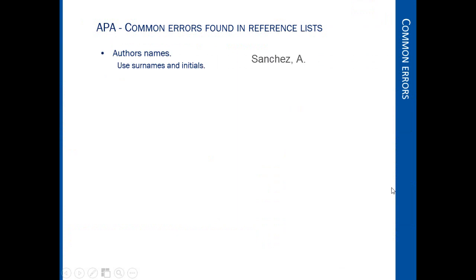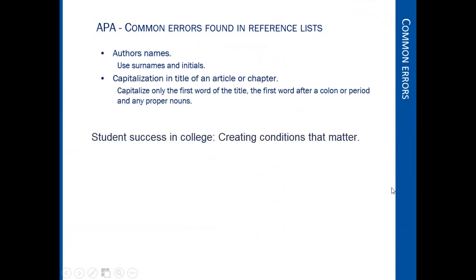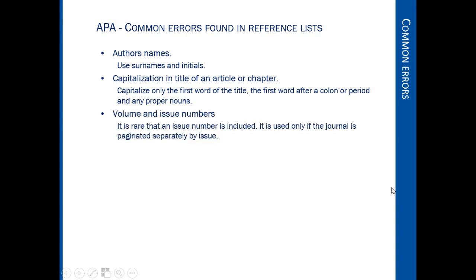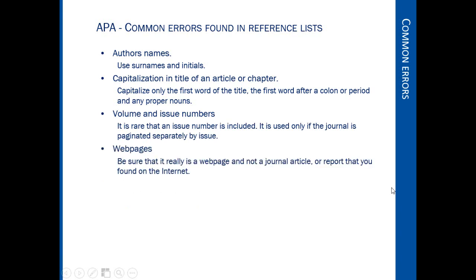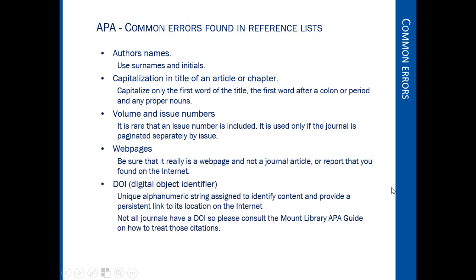Check your reference list for the following: your author should be the surname and the initial. Your title for an article or a chapter should be sentence case — that means capitalize the first word of the title and the first word after the colon or period. It's rare that you will have an issue number; it's only used if the journal is paginated separately by issue, which is quite rare. Be sure that your webpages are real webpages and not journal articles or some other format found on the internet. APA requires the use of the DOI or Digital Object Identifier. Not all journals have a DOI, so please consult the Mount Library APA guide to see how to treat those citations.